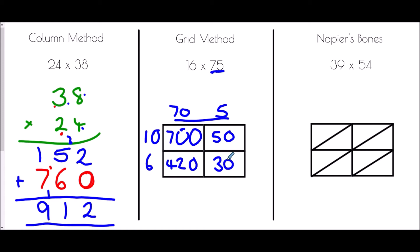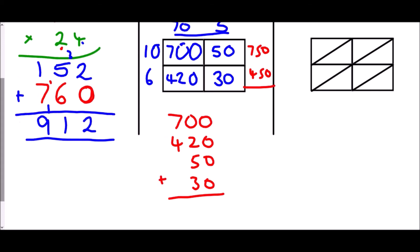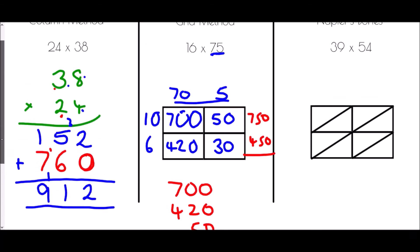Now we add those results together. I often add a cross first: 700 plus 50 is 750, and 420 plus 30 is 450. Or you can just list all of the numbers and add them in a single column: 0 plus 0 plus 0 plus 0 is 0; 0 plus 2 plus 5 plus 3 is 10, so 0 with a 1 carried; 7 plus 4 is 11, plus 1 is 12. So 16 times 75 is 1200.